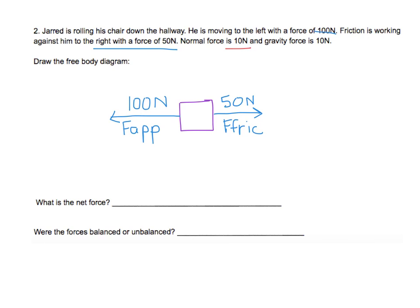Then it says normal force is 10 and gravity is 10. Remember, vectors have to come out of the box — they should not be pointed towards the box. Gravity always pulls us down, and that was 10 Newtons. Normal force always works opposite of gravity and is always pushing up — that was also 10 Newtons.